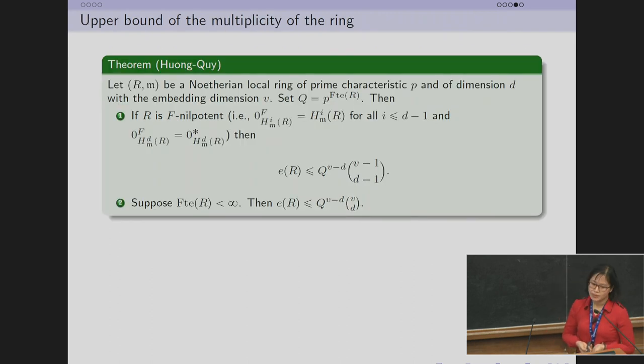Trying to extend these results, we obtain the following theorem: Let R be a Noetherian local ring of prime characteristic p, dimension d, and embedding dimension v. If the Frobenius test exponent of the ring is finite, then we have an upper bound for multiplicity of the ring. The upper bound depends on d, v, and the Frobenius test exponent of the ring.